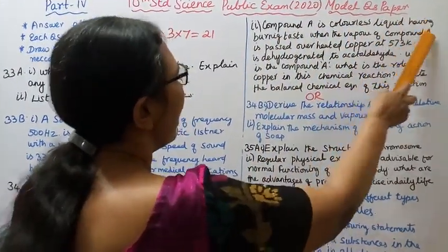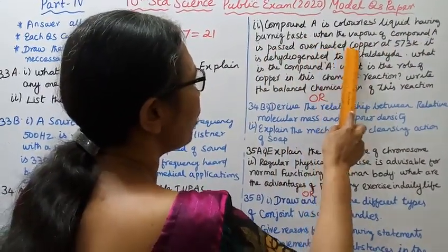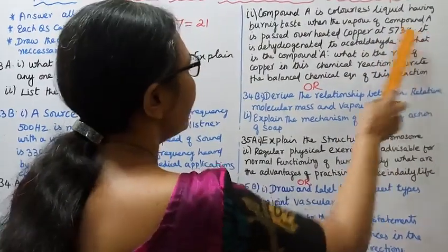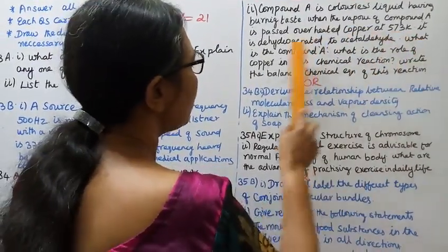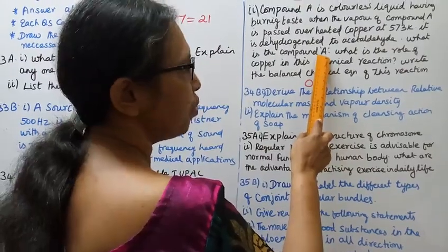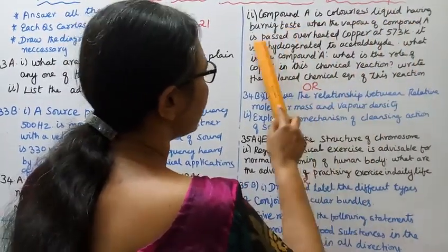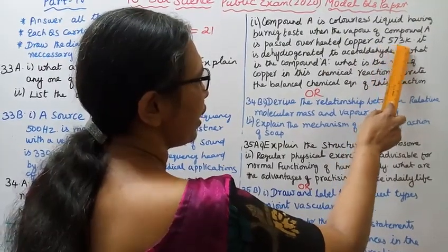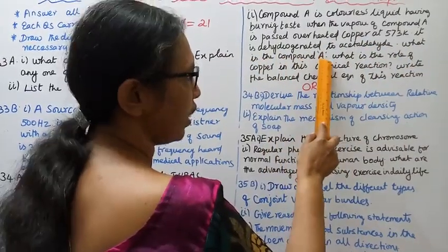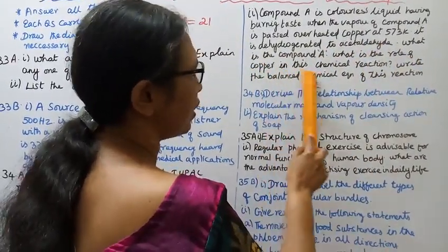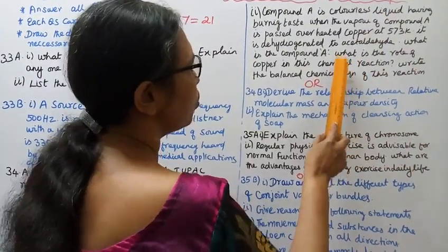Question 34A, second subdivision: Compound A is a colorless liquid having a burning taste. When the vapor of compound A is passed over heated copper at 573 K, it is dehydrogenated to acetaldehyde. What is compound A? What is the role of copper in this chemical reaction? Write the balanced chemical equation of this reaction. There are three sub-questions here — answer all of them.